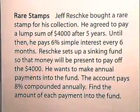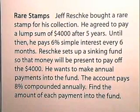Now let's prepare a sinking fund table. Jeff Reschke bought a rare stamp for his collection. He agreed to pay a lump sum of $4,000 after 5 years. Until then, he pays 6% simple interest every 6 months. Reschke sets up a sinking fund so that money will be present to pay off the $4,000. He wants to make annual payments into the fund. The account pays 8% compounded annually. Find the amount of each payment into the fund.